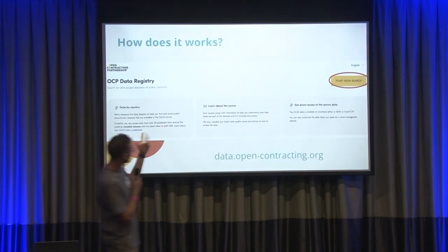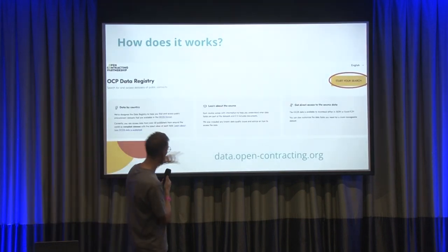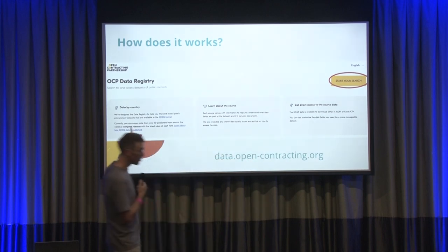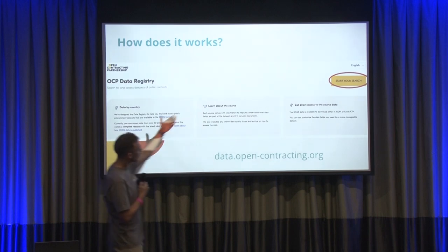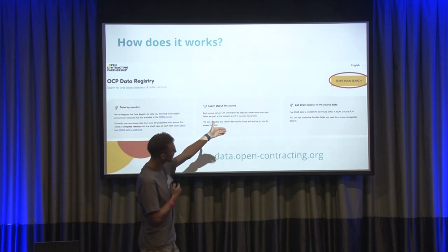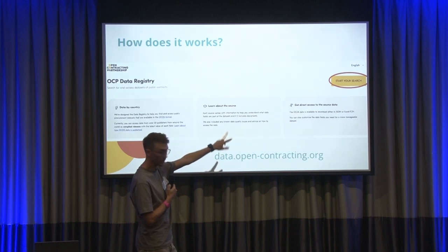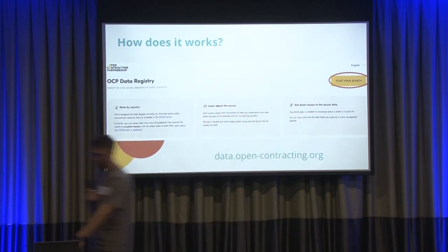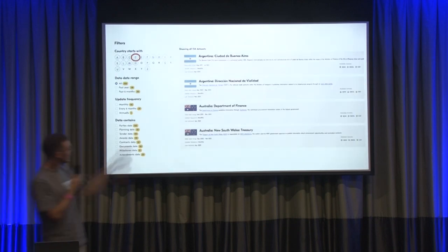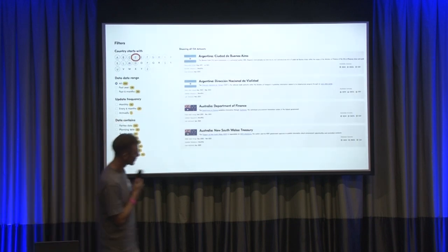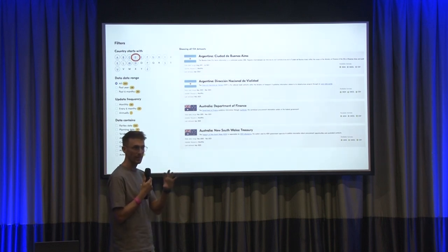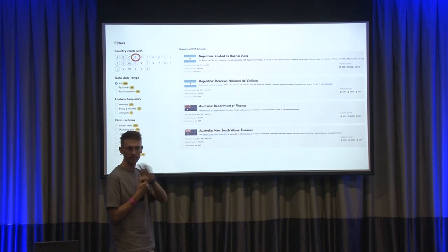How does it work? If you go to data.opencontracting.org, you will see a home page like this with a language menu. Currently we have English, Spanish, and Russian options. If you click on Start Your Search, you will see a complete full list of datasets — the datasets retrieved by the Data Registry from the different data sources and web pages.